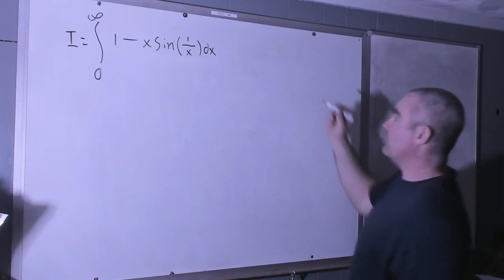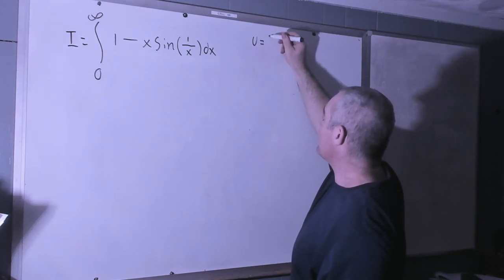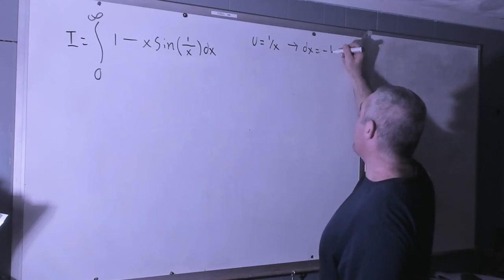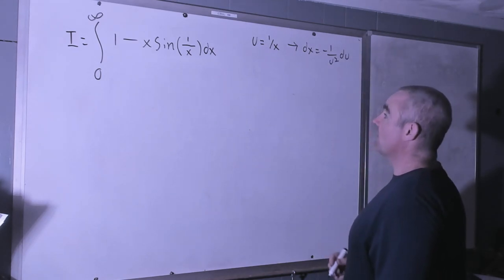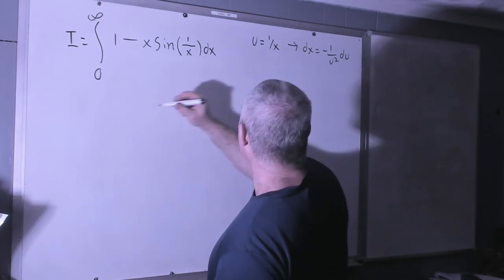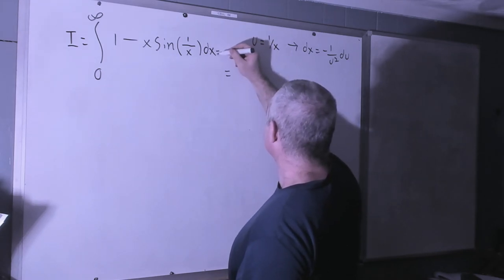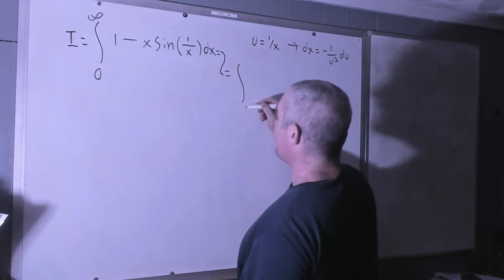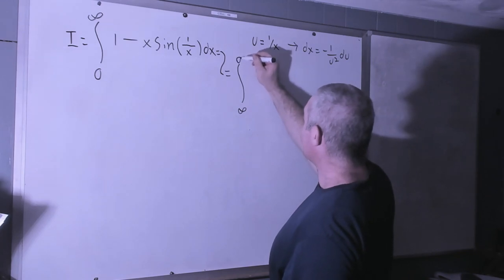All right, so the first thing I'm going to do, I'm going to make the substitution u is equal to 1 over x, which implies that dx is equal to negative 1 over u squared. So that's going to change our integral to the integral from 1 over 0 is infinity, 1 over infinity is 0.